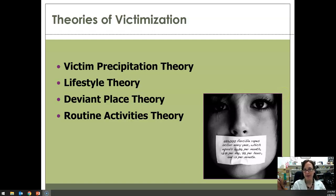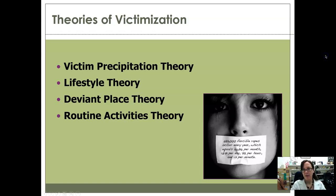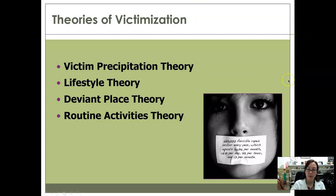There are four major theories of victimization to explain why some people are more likely to be victims than others, or why some victimization happens in some areas. All of these theories have been criticized for victim blaming, so keep that in mind, although that is not the purpose of any of these theories. The four theories are victim precipitation theory, lifestyle theory, deviant place theory, and routine activities theory.